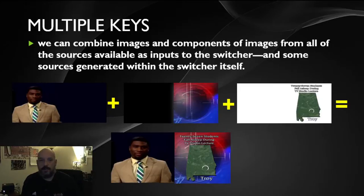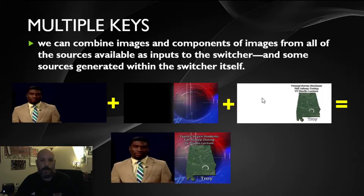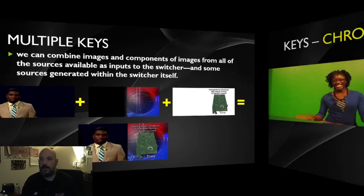We can also take keyers and add them in multiple layers. We have a segment called 'News from Around the State' where we have a camera on a talent in an over-the-shoulder position, an animated video with an alpha channel visible in black, and another piece of text with a name and picture of the state with a story slug. The checkered pattern tells me that area is completely transparent. As I layer these multiple keyers on top of each other, I have the talent, the animated background, and the locator graphics — multiple effects at one time for news, weather maps, sports keys, and similar segments.